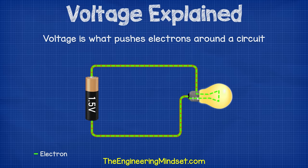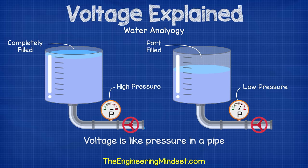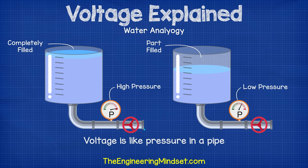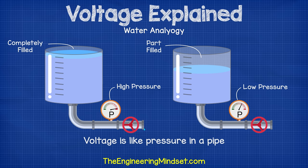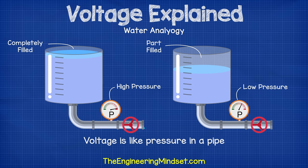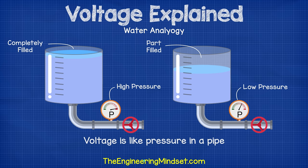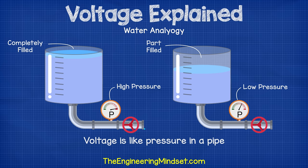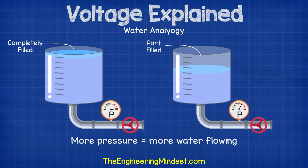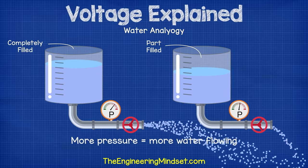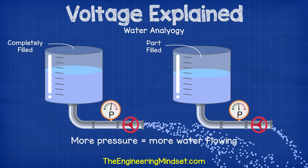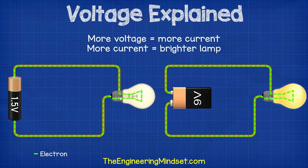It's easy to imagine voltage like pressure in a water pipe. If we have a water tank completely filled with water, then the mass of all that water is going to cause a huge amount of pressure at the end of the pipe. If we have a water tank that's only partly filled, then there will be much less pressure in the pipe. If we open the valve to let the water flow, then more water will flow at a faster rate from the high pressure tank compared to the low pressure tank. The same with electricity. The more voltage we have, then the more current can flow.